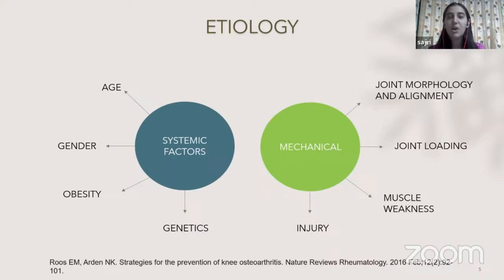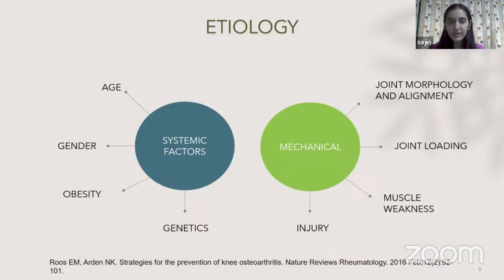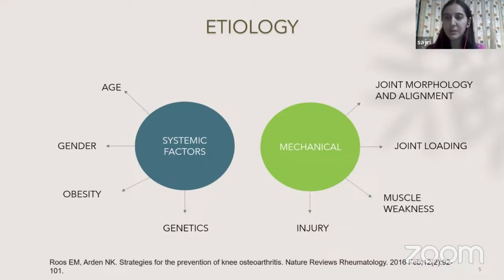What are the causes or etiology of knee osteoarthritis? There are two major factors. The systemic risk factors are age, gender, obesity, and genetics. As age advances, disease progression advances. Females are more prevalent than males in having knee osteoarthritis. Obesity is again a major risk factor, as is hereditary knee osteoarthritis in the family. The mechanical factors which we can control are muscle weakness, joint loading, joint morphology and alignment. Injury is also a major risk factor, leading to post-traumatic or secondary knee osteoarthritis.